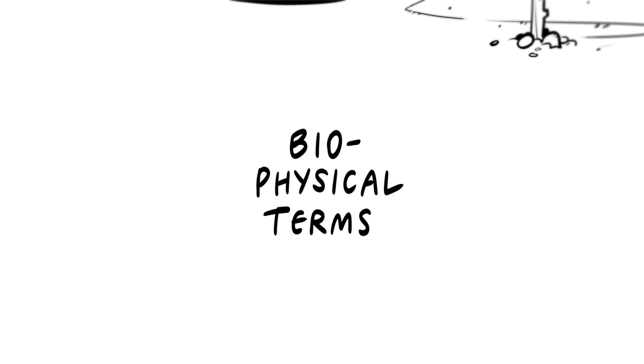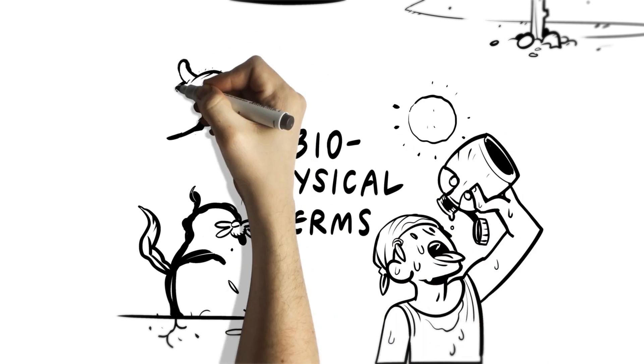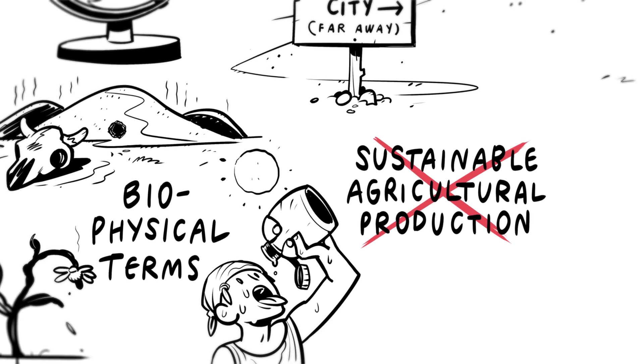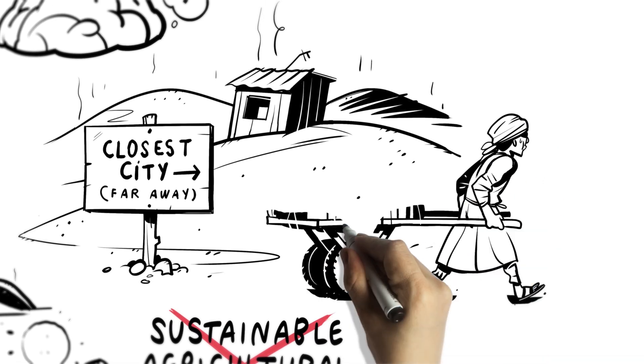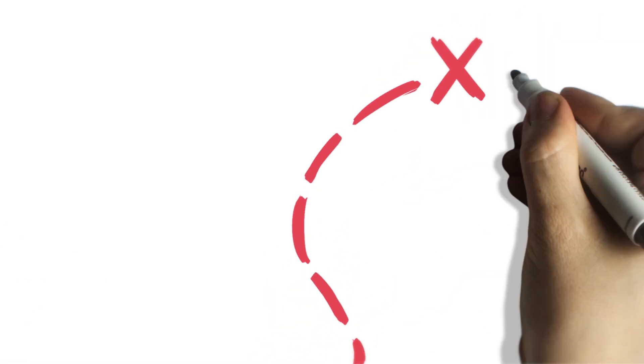In biophysical terms, marginal environments are often characterized by poor soils, inadequate quantity and quality of water, and unfavorable climatic conditions for sustainable agricultural production. These environmental changes are exacerbated by economic and social problems facing communities living in these areas.